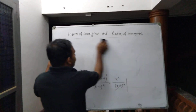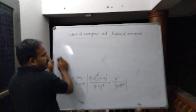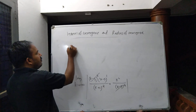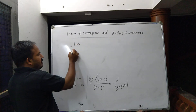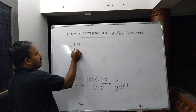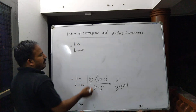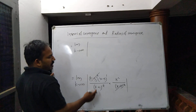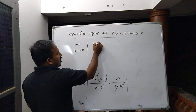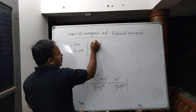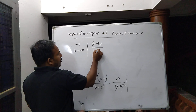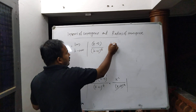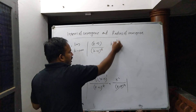The (x minus 5) to the k terms cancel. We are left with the limit as k tends to infinity of the absolute value of (x minus 5) to the 1, times k squared divided by (k plus 1) squared. Those common factors are cancelled.